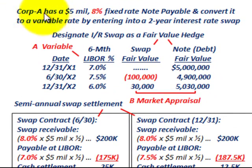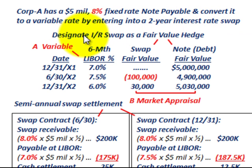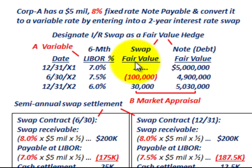In this example, Corporation A has $5 million worth of 8% fixed rate notes payable. We use notes payable so we don't have to worry about bond amortization. They enter a two-year interest rate swap to convert it into a variable rate, and designate this interest rate swap as a fair value hedge. Two things we need to deal with are the variable interest rate and the fair value of the swap, as well as the fair value of the note or debt.